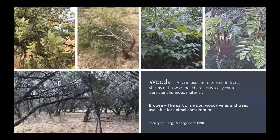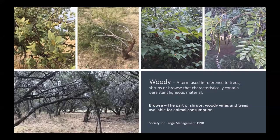Woody plants — from the Society for Range Management glossary — refers to trees, shrubs, or browse that characteristically contain persistent ligneous material. They typically have a trunk, are thicker and stiffer, and mostly larger in size when mature. Browse is the part of shrubs, woody vines, and trees available for animal consumption — particularly the leaves and new stem tips that are highly digestible and sought out by browsers.